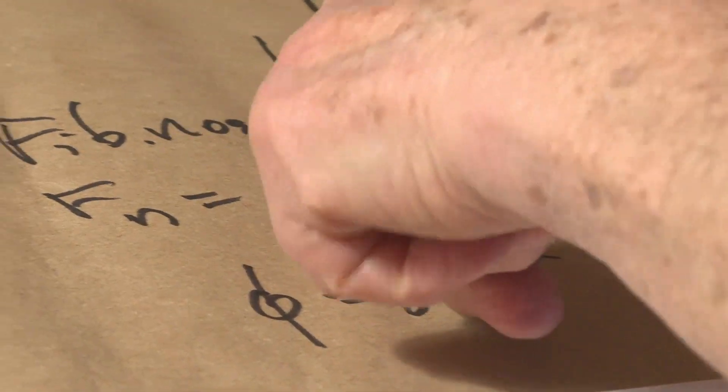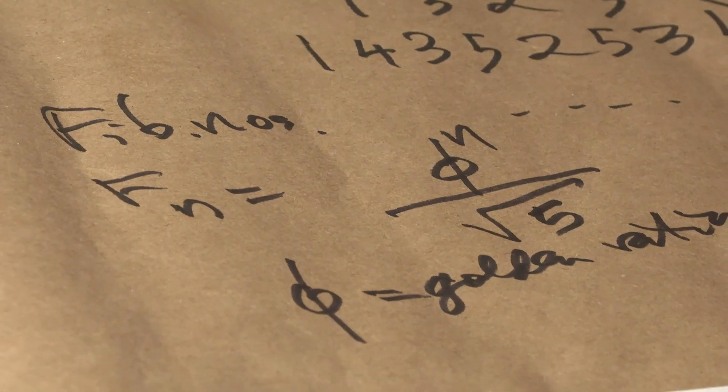So if you round that, that'll be something that ends in .0001 or .9999. If you round it to the nearest integer, you get the Fibonacci numbers exactly.